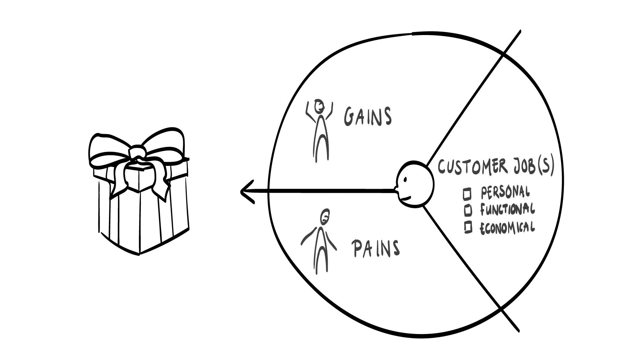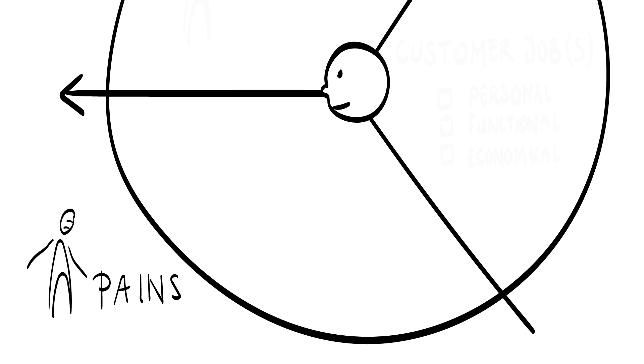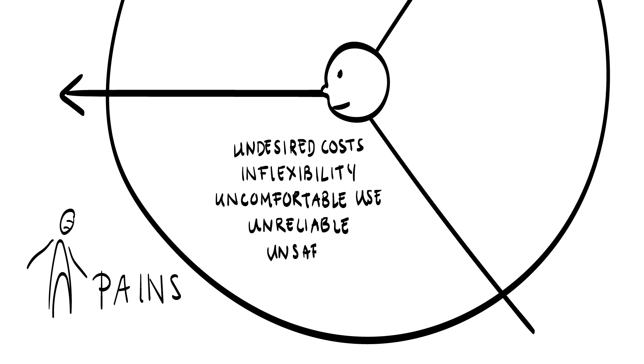Let's start with the pains. These are often the problems the customer faces when using alternative existing solutions. These may include undesired costs, inflexibility or uncomfortable use of a product. It may be unreliable and not completely safe or incompatible with other devices or activities. Sometimes these pains are very clear and can be easily articulated. However, some customers take the pains for granted or do not even have a perception or clear need that things can be done better.